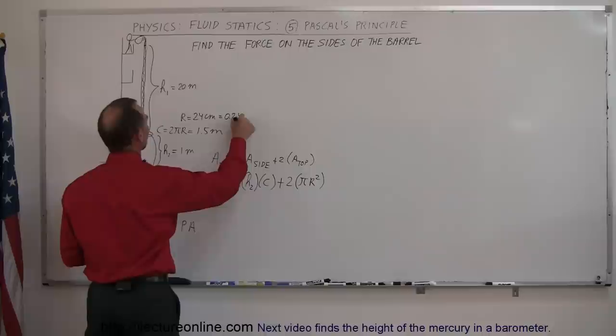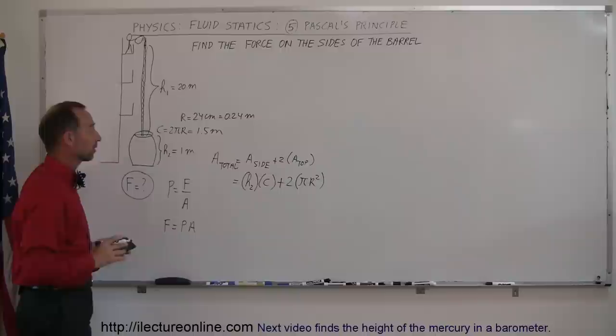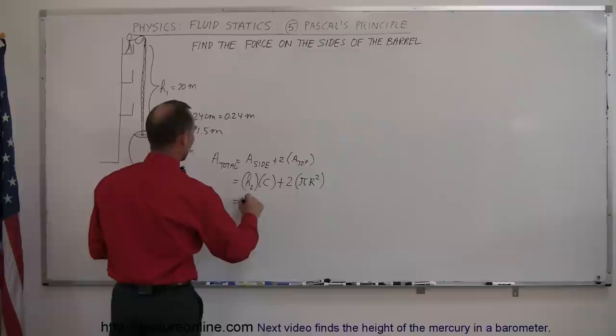Now we have everything we need to find the surface area of this barrel. That would be equal to 1 times C, where C is 1.5 meters.